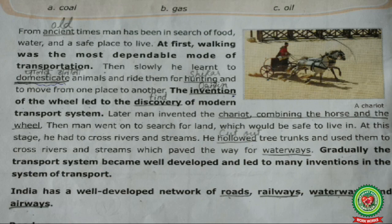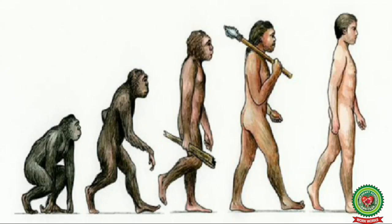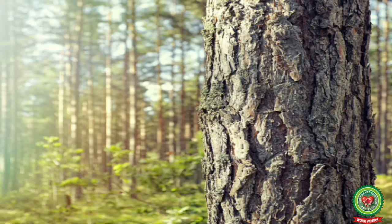Underline 'waterways' as this is a term, and its meaning is the slowest and cheapest means of transport that sails on water. As man was developing and becoming smarter, he went to search for land to find a safe place to live. For that he had to cross rivers, so he cut out tree trunks and used them for crossing rivers and streams - this started the means of waterways.